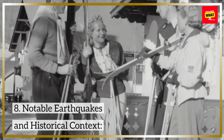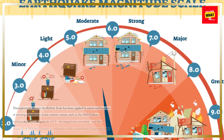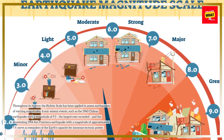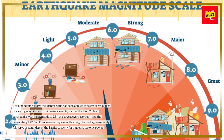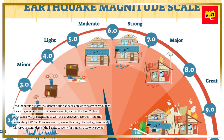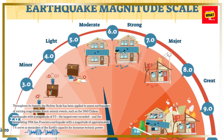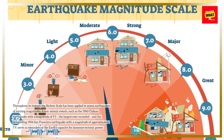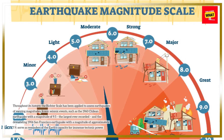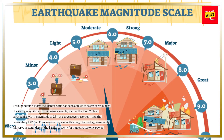Throughout its history, the Richter Scale has been applied to assess earthquakes of varying magnitudes. Iconic seismic events, such as the 1960 Chilean earthquake with a magnitude of 9.5 — the largest ever recorded — and the devastating 1906 San Francisco earthquake with a magnitude of approximately 7.9, serve as reminders of the Earth's capacity for immense tectonic power.